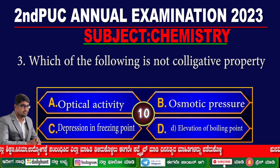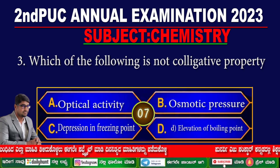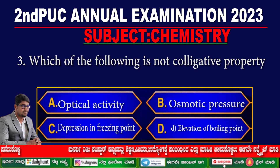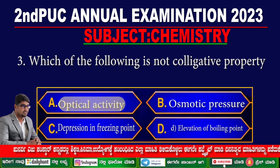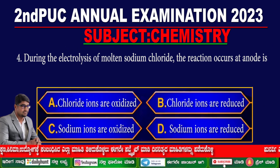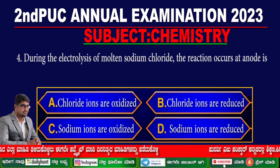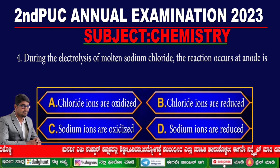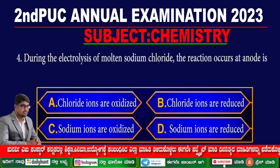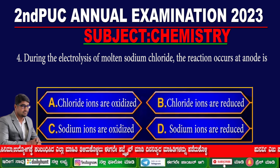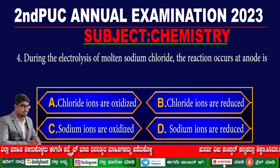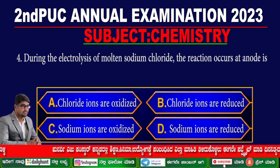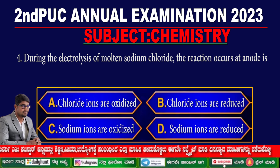Your time starts now. Question 4. During the electrolysis of molten sodium chloride, the reaction that occurs at the anode is — option A: chloride ions are oxidized, option B: chloride ions are reduced, option C: sodium ions are oxidized, option D: sodium ions are reduced.